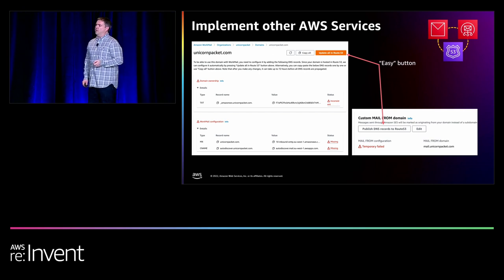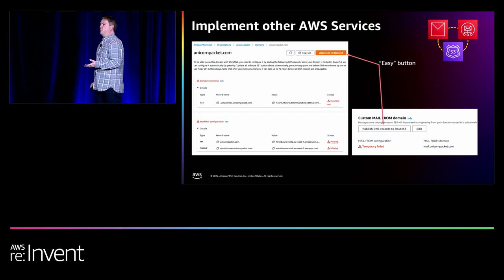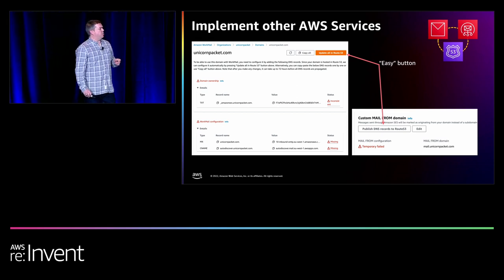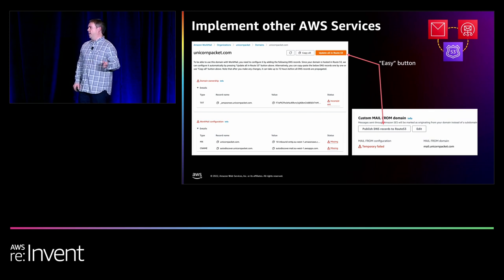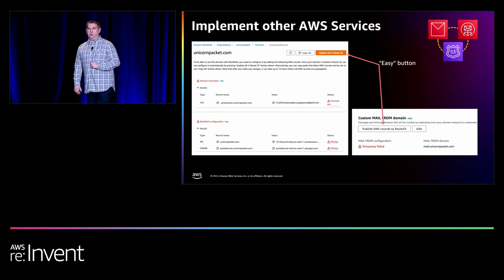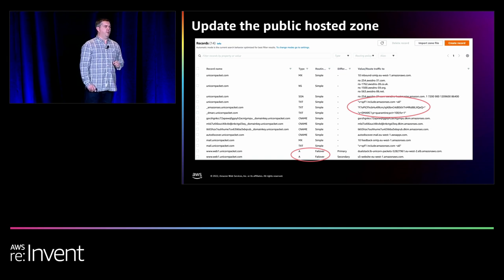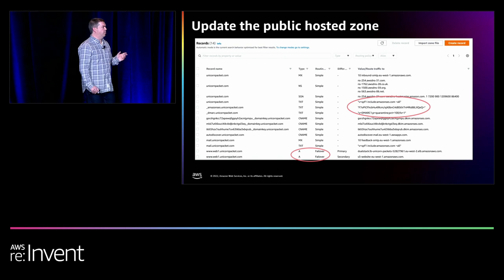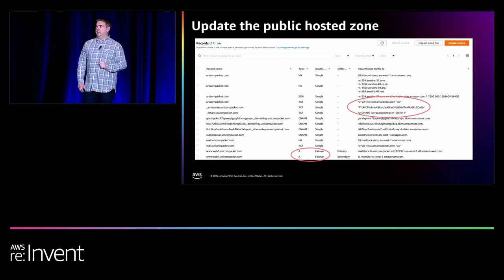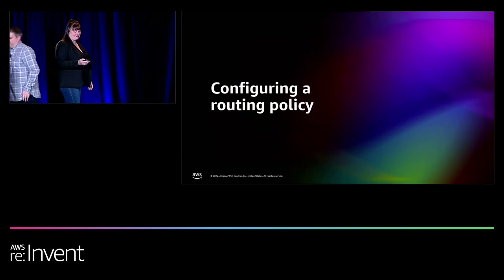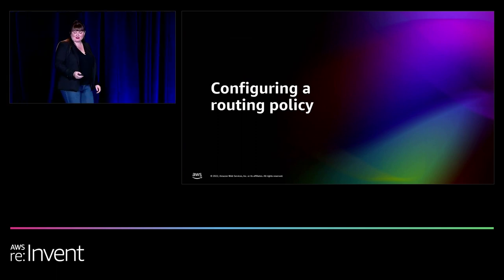With two health checks configured — one for the load balancer and one for the S3 bucket — you can select one to get further detail including the health checkers tab showing health checkers around the world and their status. Next, configure the routing policy. Create the record name — www.web1 — we're configuring the application load balancer first. Since it's an AWS resource, we use an alias record. Configure where to route traffic to, choose the application load balancer, choose the London region EU-West-2, then specify the load balancer from the dropdown. Set the routing policy to failover and the failover record type to primary, then specify the health check ID we just created. Hit create records — that's one done.